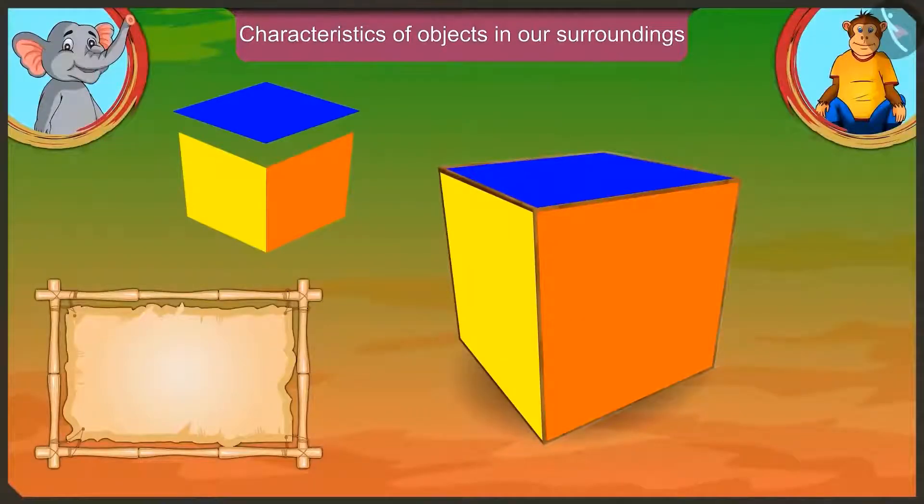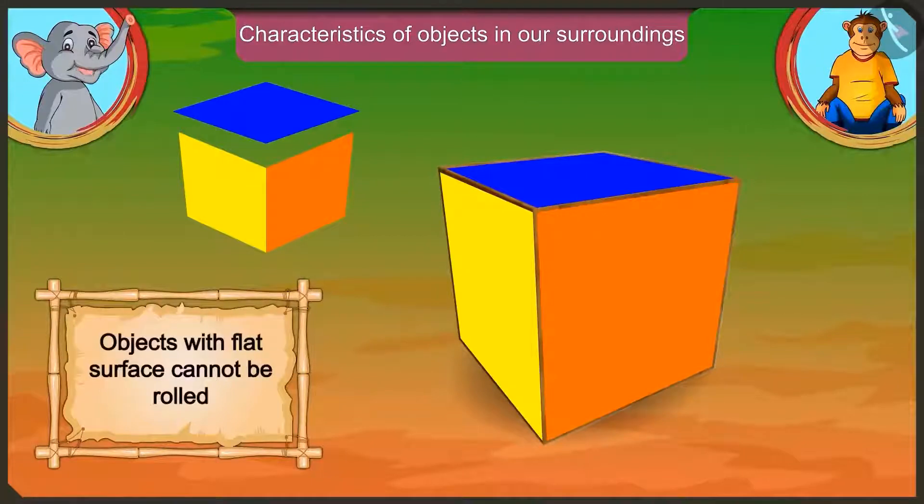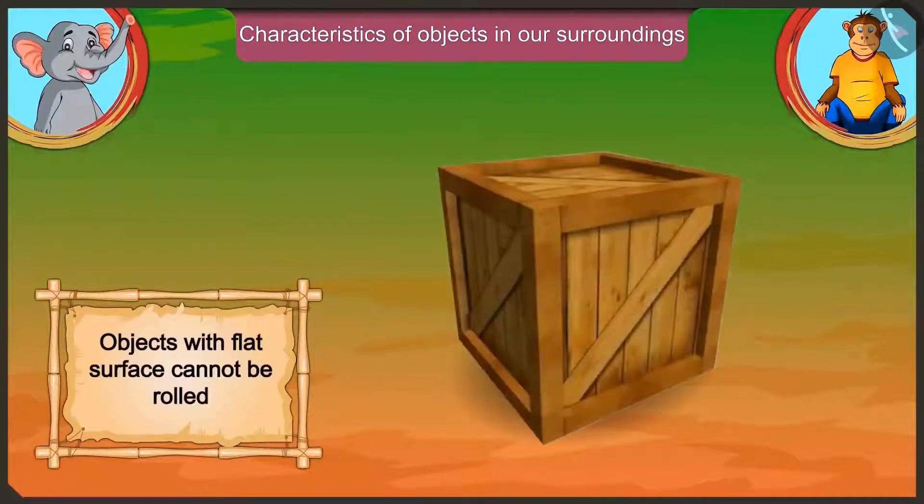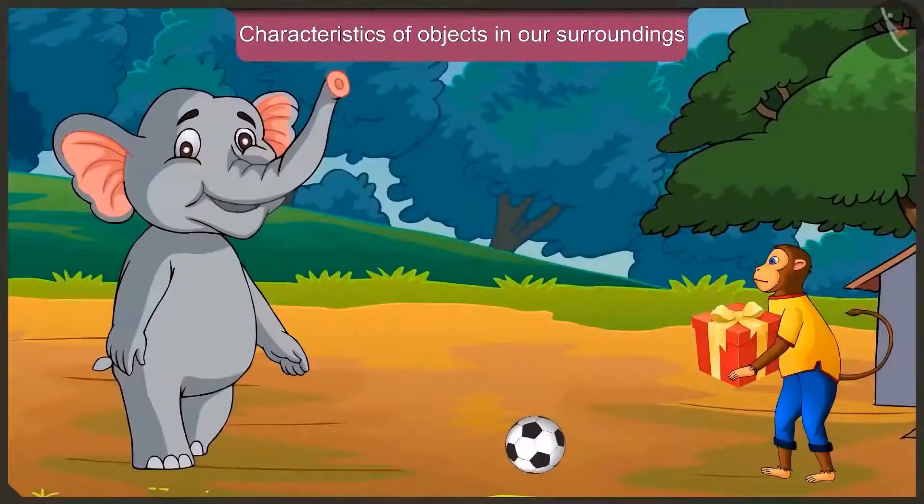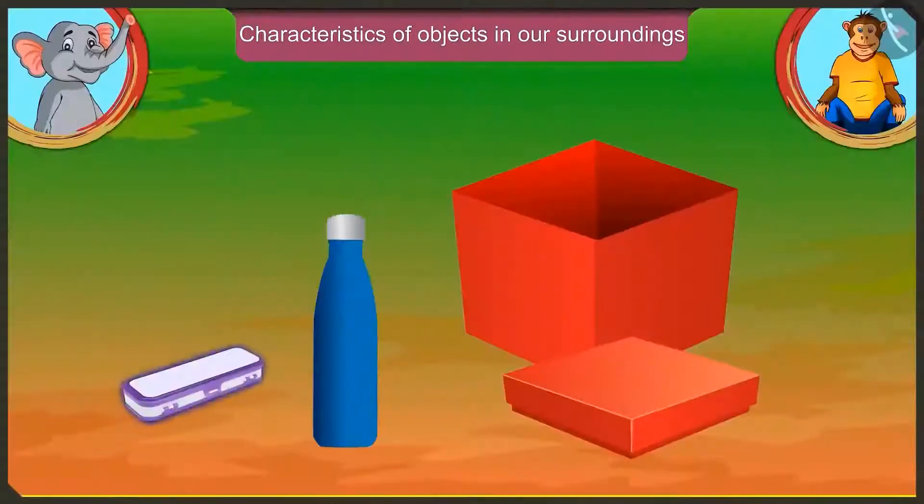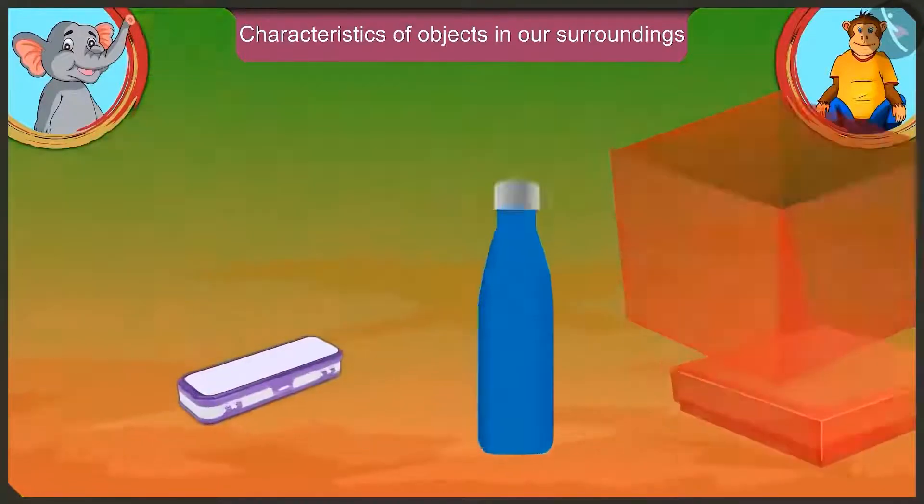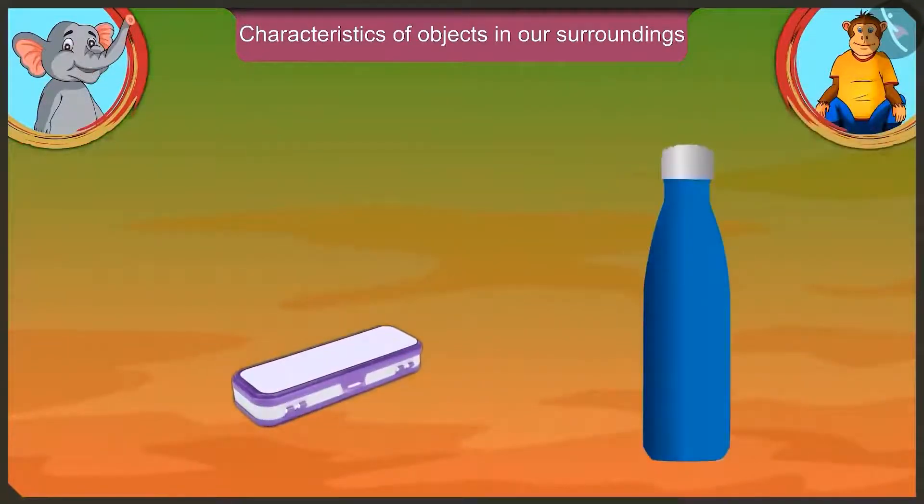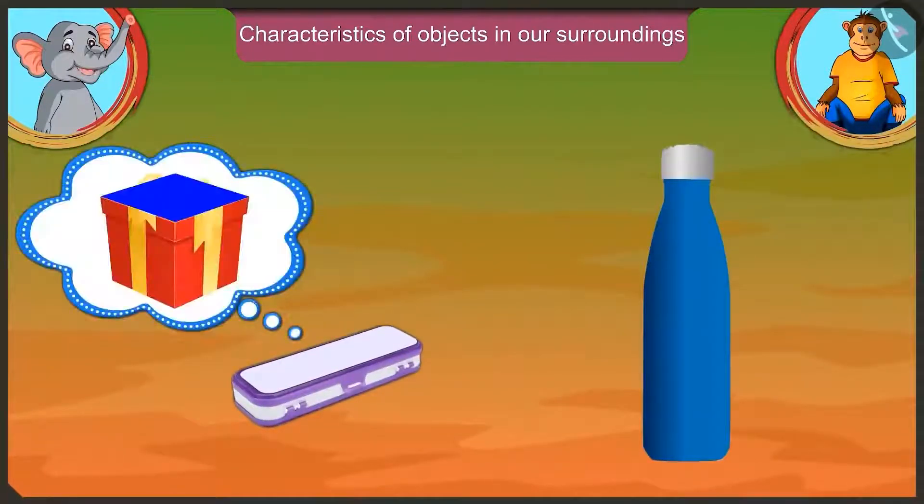And those objects which have got flat surface cannot be rolled. Isn't it? Yes, Appu. Jaggu, what gift did you get for Golu? I have got this pencil box and a water bottle for him. This pencil box also has a flat surface just like your box.